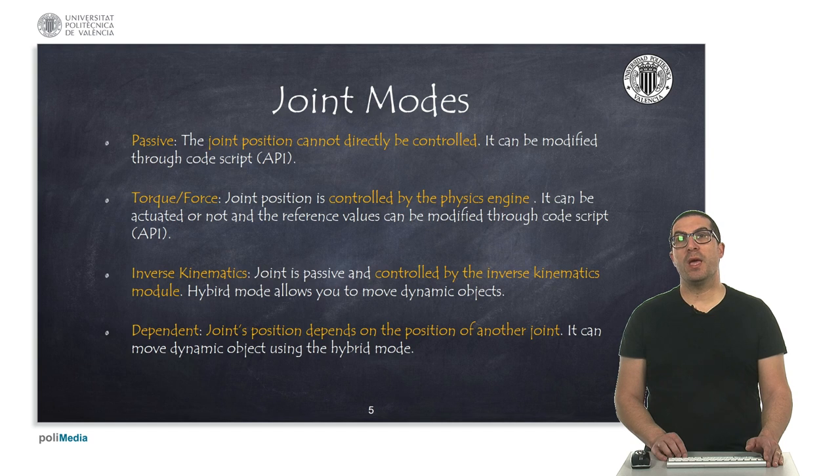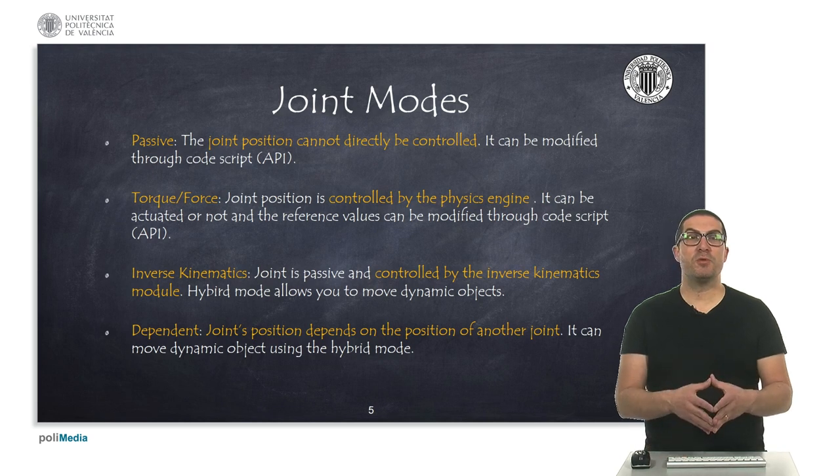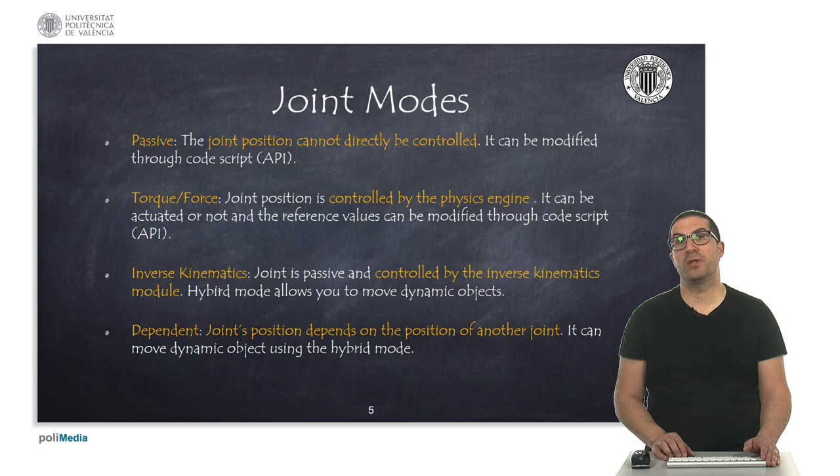Finally, joints can be in inverse kinematic mode, so the inverse kinematic module controls the position of the articulation. Or a joint can be also in dependent mode, which means that its position depends on the position of a different joint.